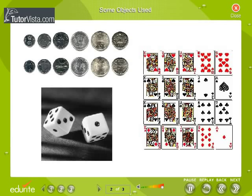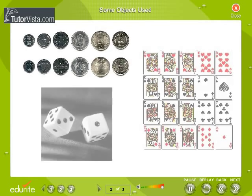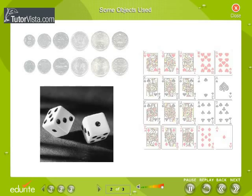Some Objects Used: Coins - head or tail are the outcomes. Die - a die is a well-balanced cube with six faces. Each face is marked with dots from 1 to 6. There is a number on each face. When we throw a die, the possible outcomes are 1, 2, 3, 4, 5, and 6.